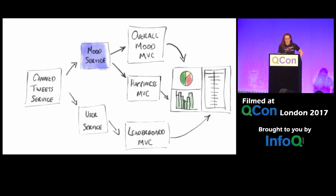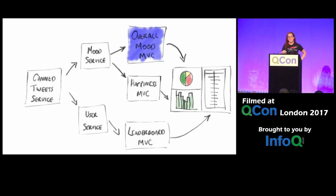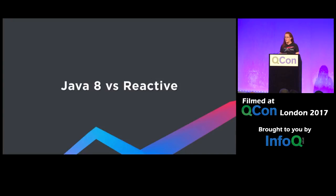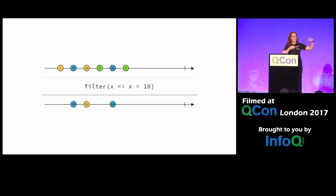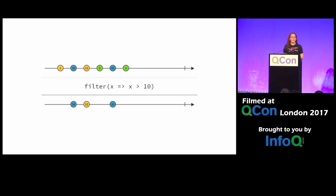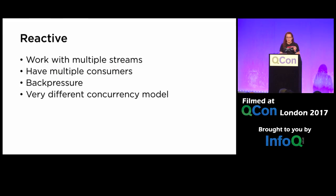Java 8 streams and reactive streams look the same but they're not the same — they don't work the same way. Reactive streams are like infinite streams of events. With reactive streams, you can have multiple subscribers to an individual stream, zip multiple streams together, and work with them in completely different ways. Java 8 streams are more like nice syntax for querying collections. Reactive streams support multiple consumers, you can reuse them, back pressure is extremely important, and it has a very different concurrency model — which is worth reading about.